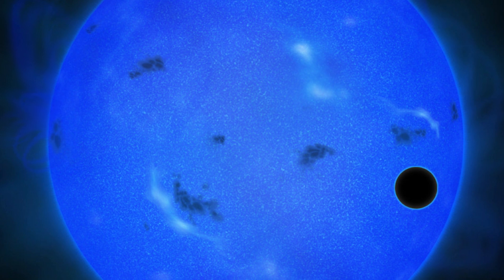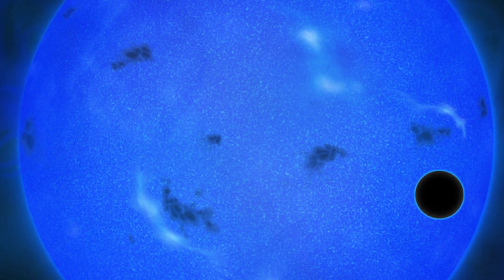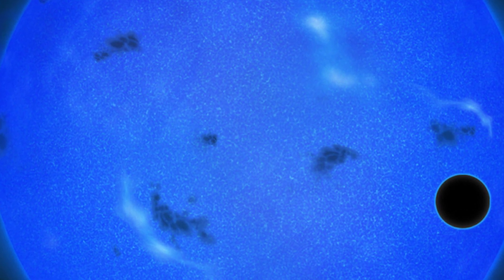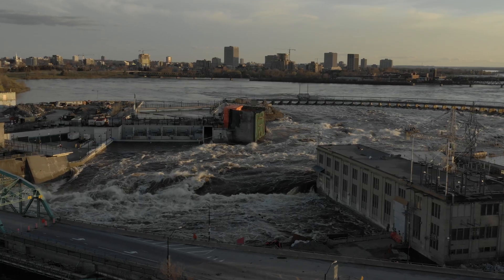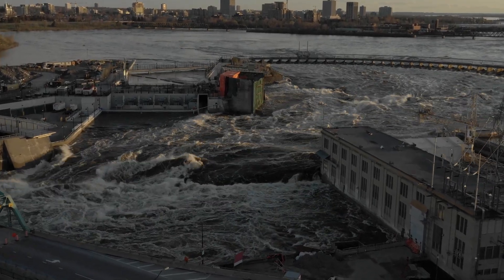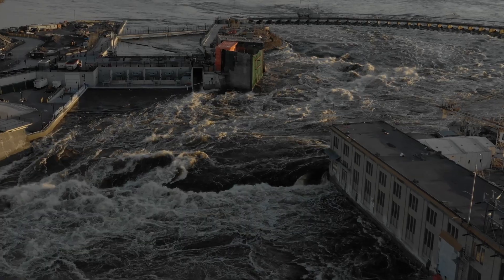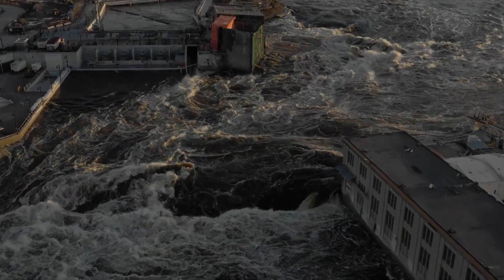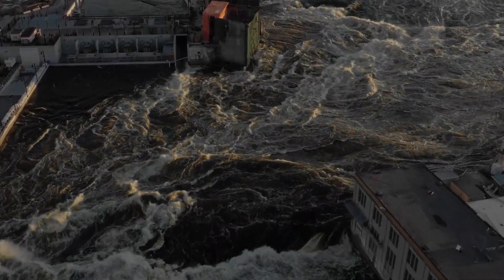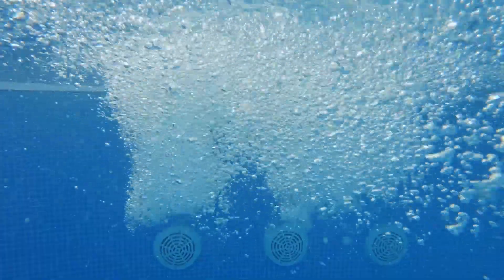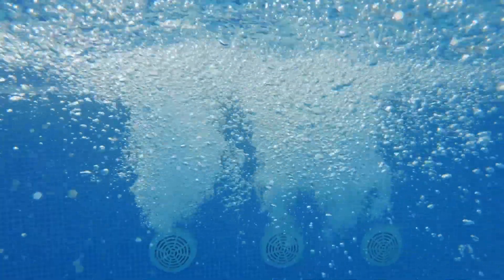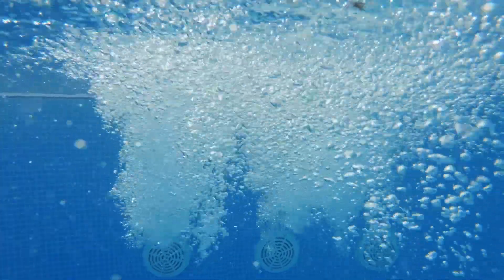Another notable mention is GJ1214b, a planet orbiting the star Gliese 1214. Situated a near 40 light-years away from us, this world is intriguing due to its thick atmosphere which might contain large quantities of water. This could suggest vast oceanic depths, possibly with extreme conditions differing significantly from Earth's oceans.